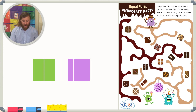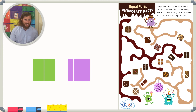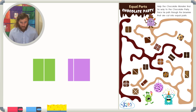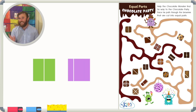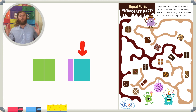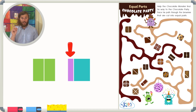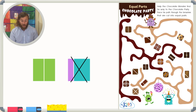What about this other square? It's the same size, it's the same shape, but are our two parts equal? Does each part take up the same amount of space? This part takes up way more space than this part. So this square is not cut into equal parts.